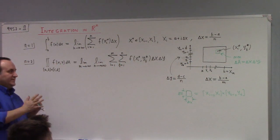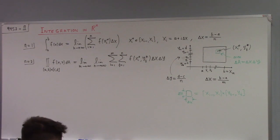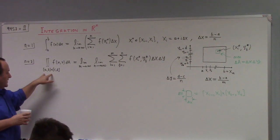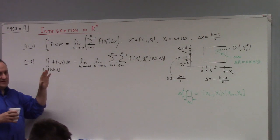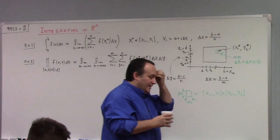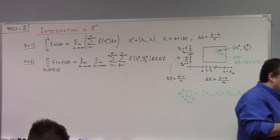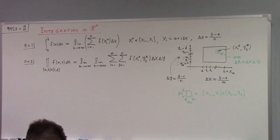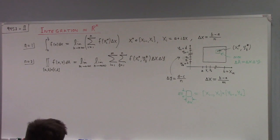The way I'm setting this up is that the subdivision of the rectangle, a comma b cross c comma d, is divided up into equal-size little rectangles. I'm not assuming that delta x and delta y are the same width — they're not squares necessarily, just little rectangles. Does this seem like a reasonable definition to you?